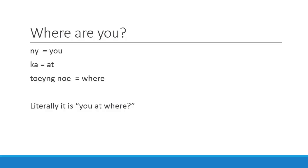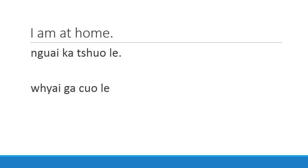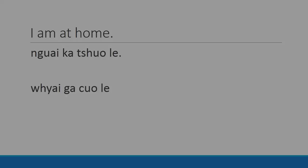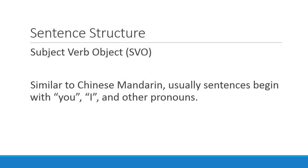To answer this question, let's say I want to say that I'm at home. I say: Why got trolley? Again from lesson 2, we learned that 'why' means 'I,' 'got' means 'at,' 'chuo' means 'home,' and 'li' kind of means 'inside the house.' So chuo li together means 'inside the house.' When you put it all together — why got chuo li — it means 'I'm at home.'